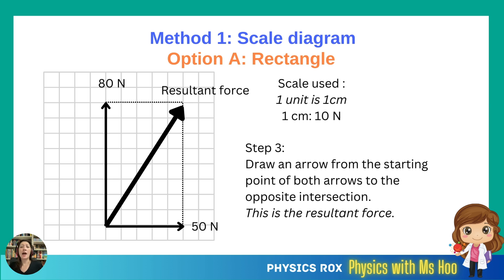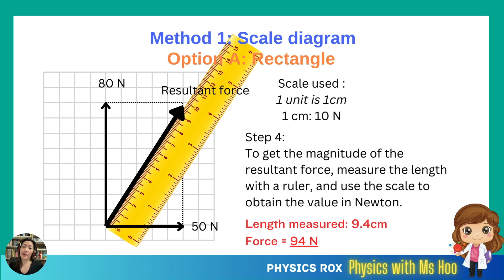Now that we have our resultant force, how do we get the values? To find the magnitude of the resultant force: because this is a scale diagram where you've drawn everything to scale — the 50 N and 80 N based on the scale provided — all you need to do is take your ruler and measure the length of the resultant force. Once you have that length, use the scale to convert that length value into the force value in Newtons. For example, let's say we've drawn this out and when we measure the length we get 9.4 centimeters. Based on the scale, this means that the force value is 94 N.